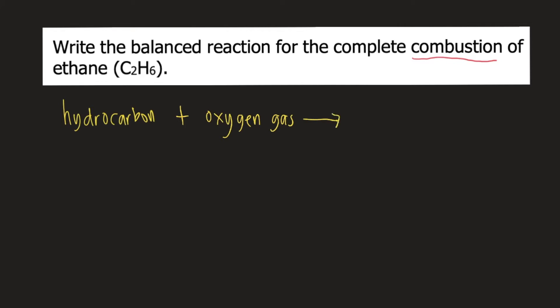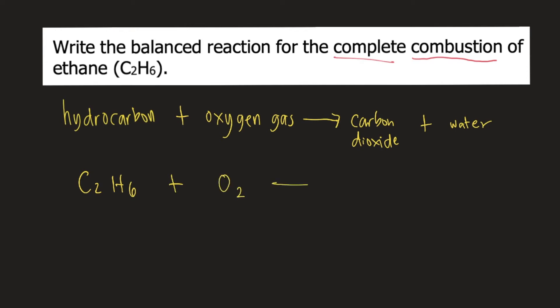The problem says the combustion is complete. When you say complete combustion of a hydrocarbon, there are only two products: carbon dioxide and water. So any hydrocarbon that undergoes complete combustion forms CO2 and H2O. Our hydrocarbon is ethane, C2H6, plus oxygen gas O2, and the products are carbon dioxide, CO2, and water, H2O. So we need to balance this reaction.